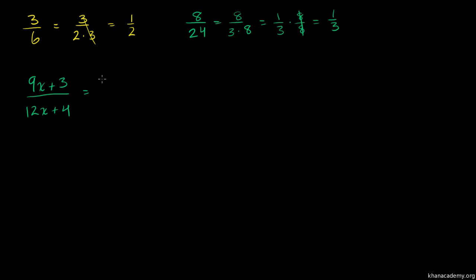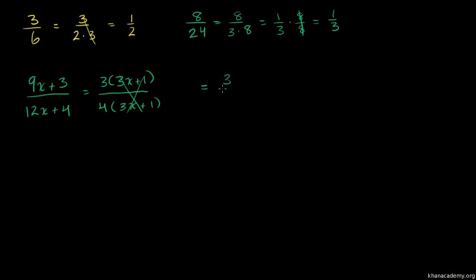The numerator is equal to 3 times (3x + 1). And our denominator, we can factor out a 4: that's 4 times (3x + 1), since 12x divided by 4 is 3x, and 4 divided by 4 is 1. So the numerator and denominator have a common factor, (3x + 1), and they cancel out. Written in lowest terms, this rational expression is equal to 3/4.